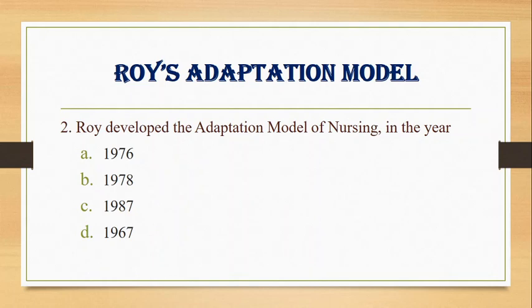Number 2. Roy developed the adaptation model of nursing in the year: A. 1976, B. 1978, C. 1987, D. 1967. Answer: A. 1976.